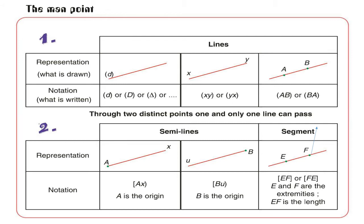Now let's move to the second line. As you notice, it has two letters: first extremity X and the second one is Y. Can we measure this line? No, I can't measure this line. It has no measurement because extremity X is unlimited and also Y is unlimited. So when the extremities are unlimited, I can't measure this line — I call it a line. The line has no measurement and the extremities are unlimited.